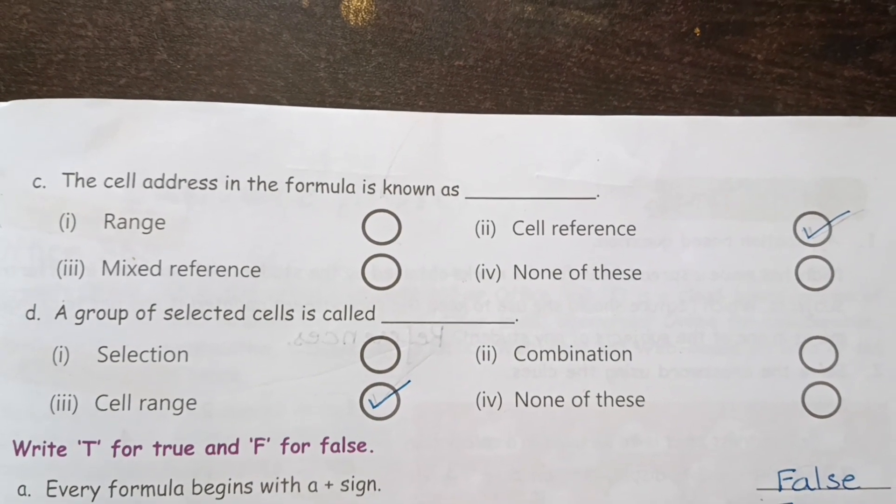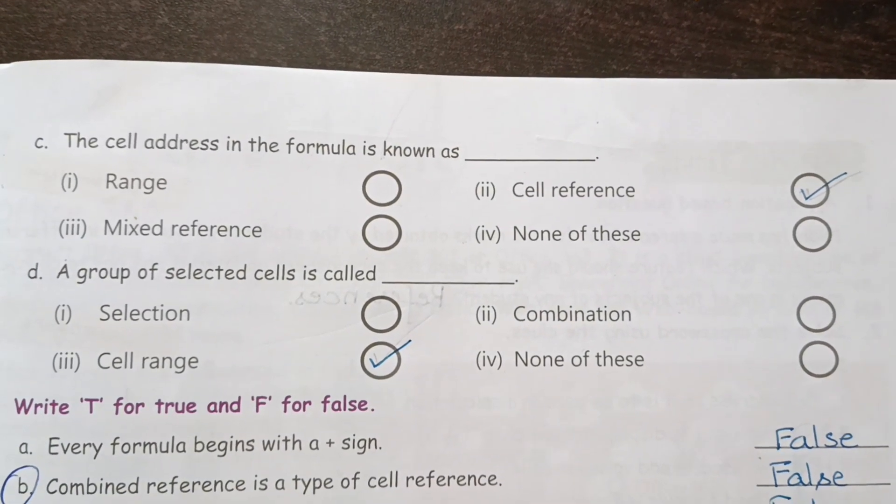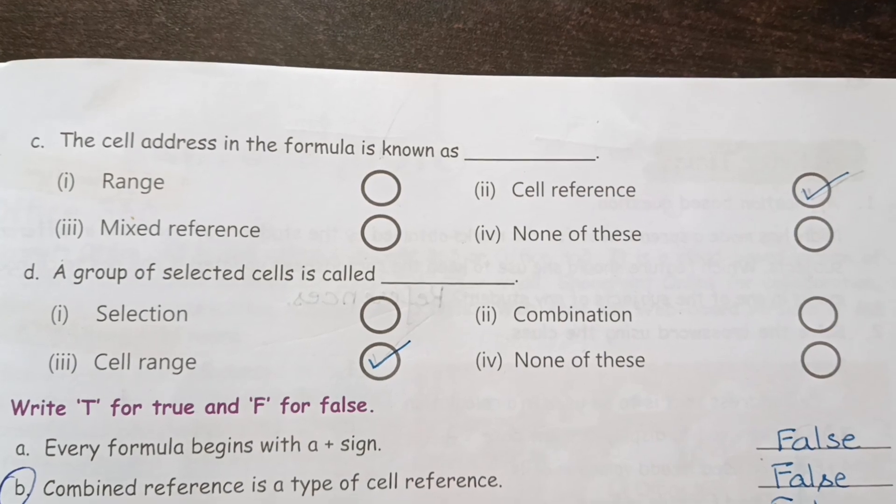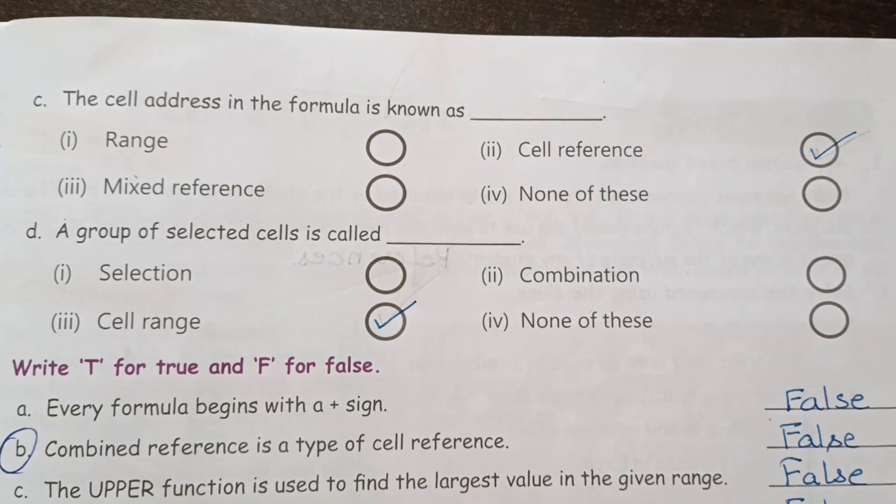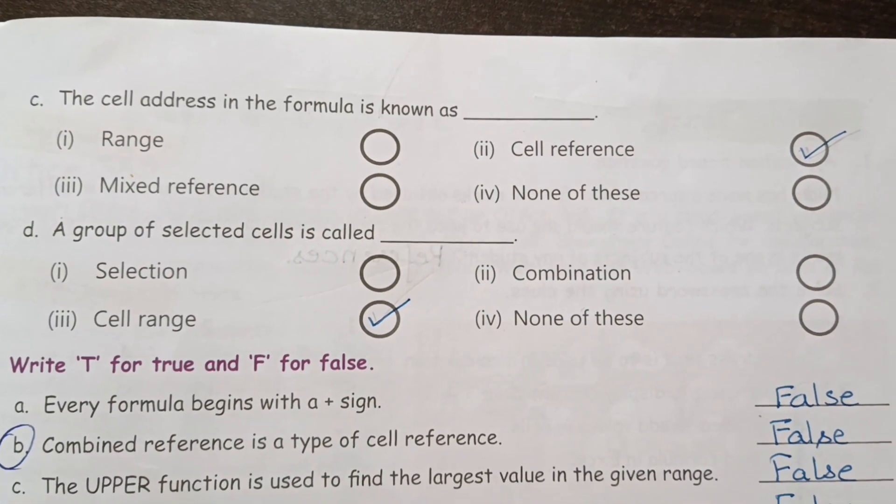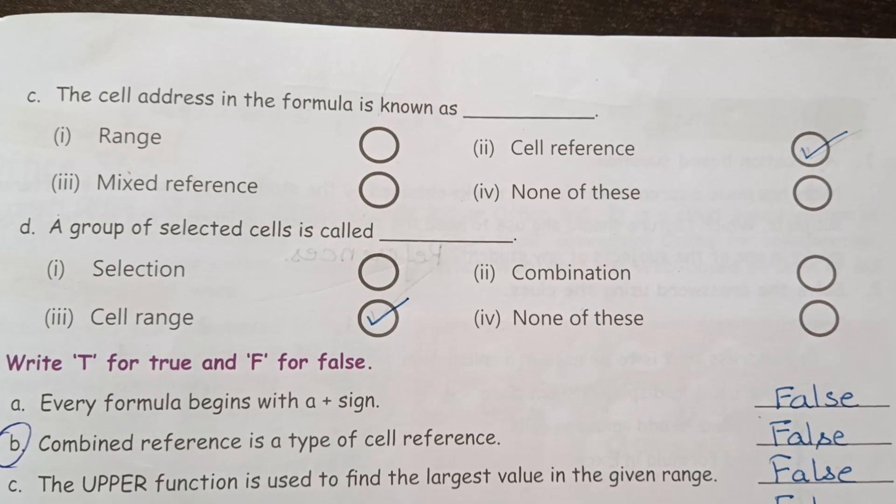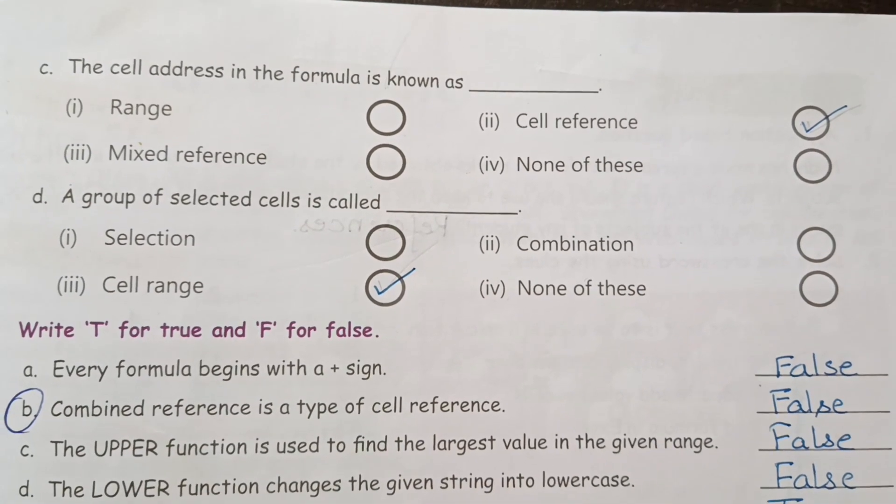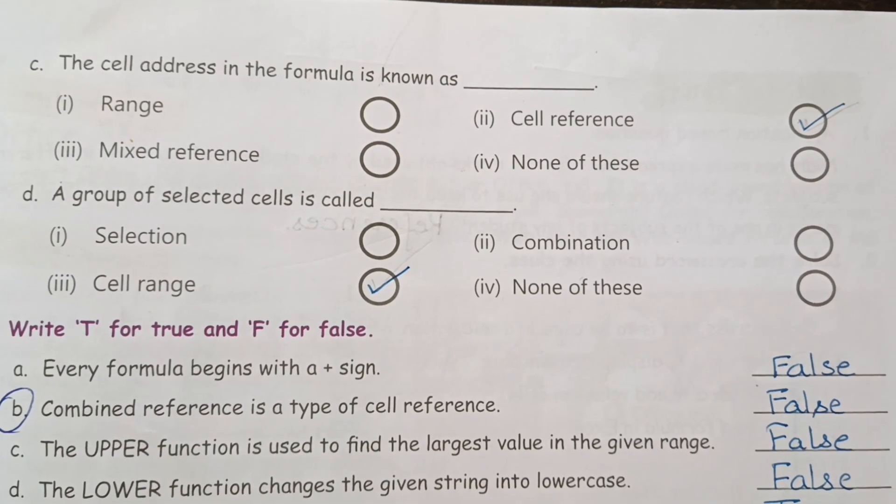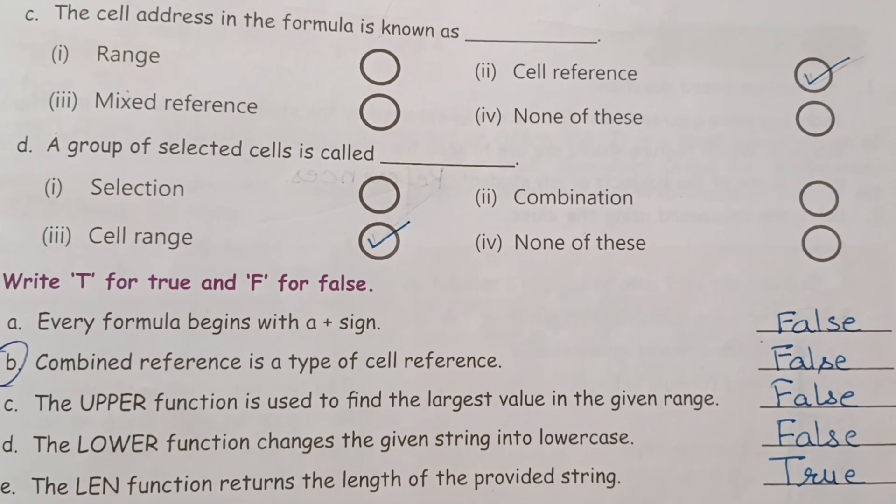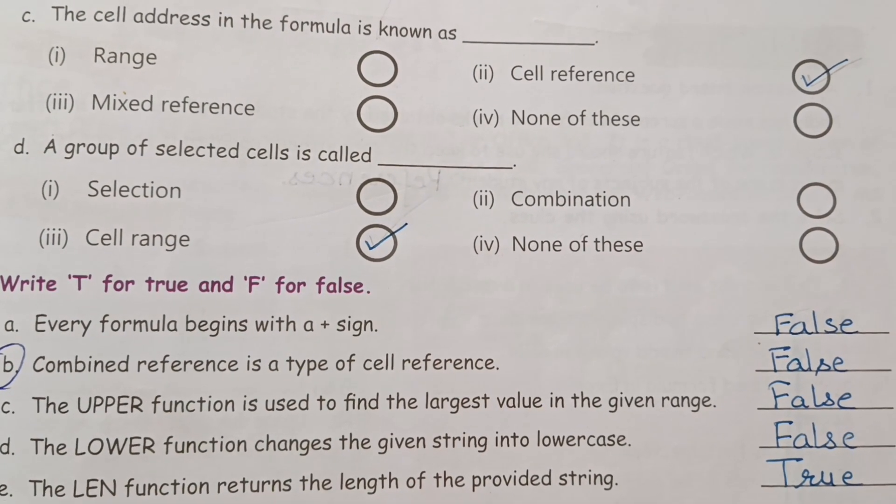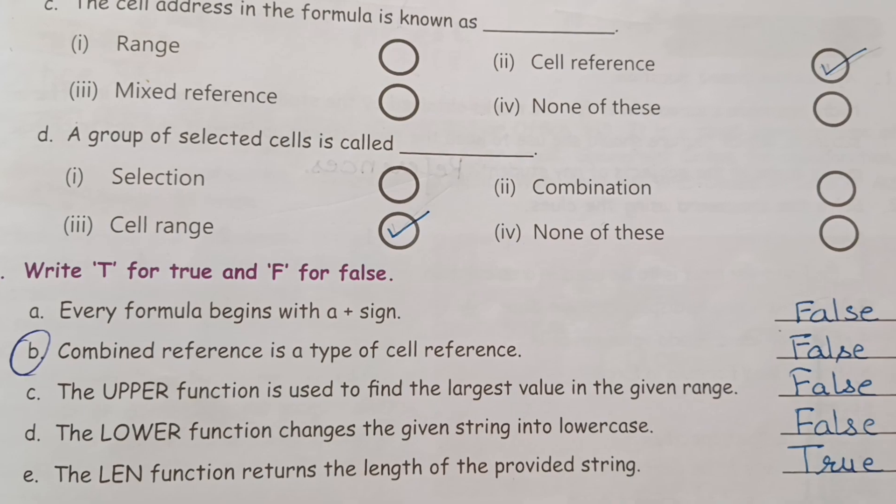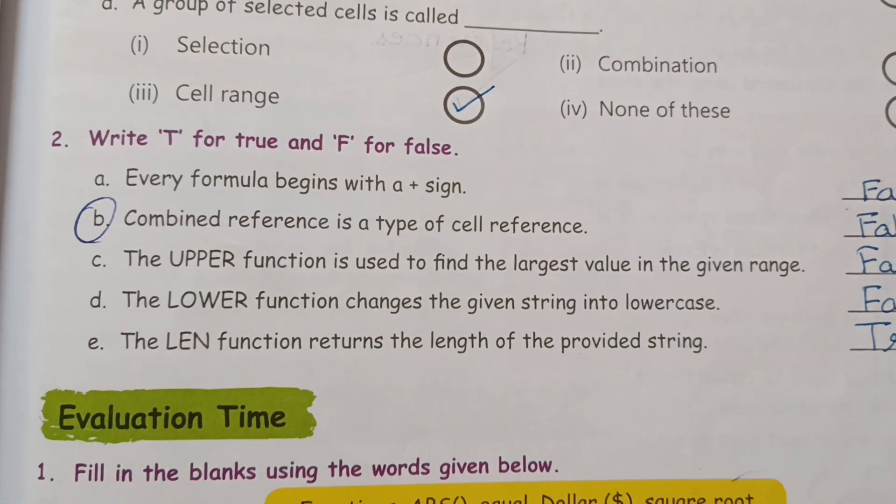Next is True/False. Every formula begins with a positive sign - no, it is false. Combined reference is a type of cell reference - false. The UPPER function is used to find the largest value in the given range - false. The LOWER function changes the given string into lowercase - false.